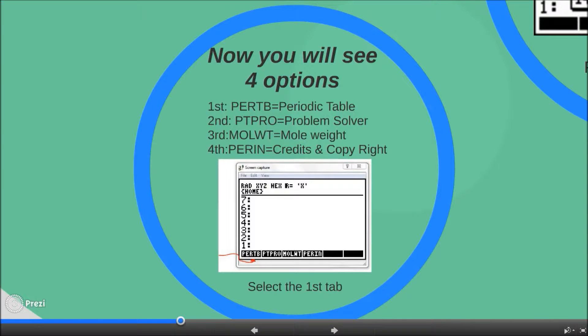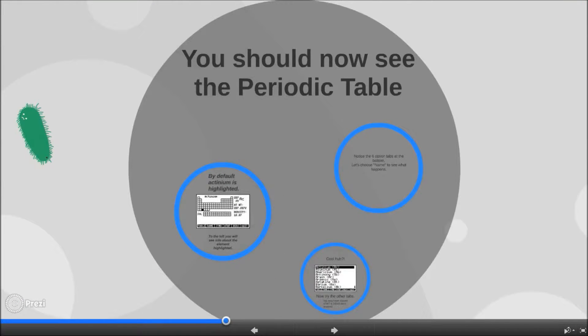Now you will see four options. Select the first tab. You should now see the periodic table.